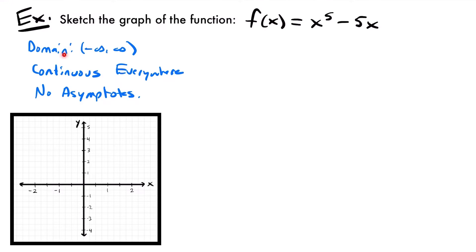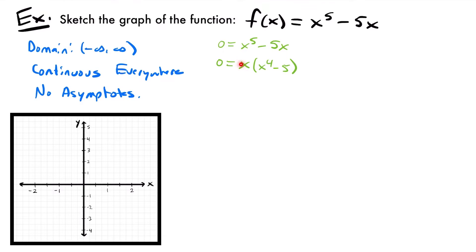Now that we have determined the domain, continuity, and asymptotes — which we said there aren't any — we can move on to finding points about our function to help us figure out how to graph it. The first ones we're going to find are our x and y intercepts. We'll start by determining our x-intercepts. The way you do that is you set your function equal to zero and solve for x. So we'll have zero equals x to the fifth power minus 5x. Solving for x, I see a common factor of x in each term, so I'll pull that out: zero equals x times x to the fourth power minus five.